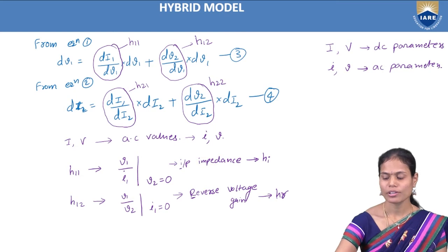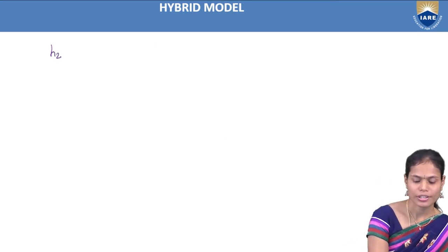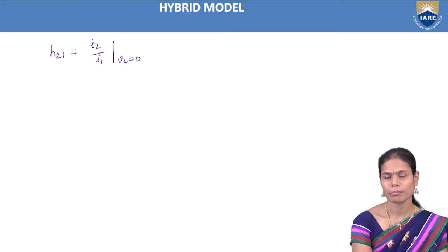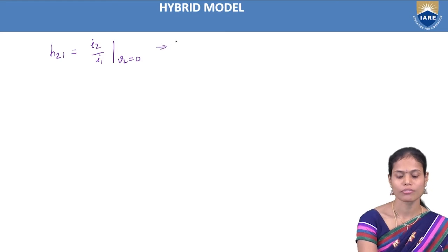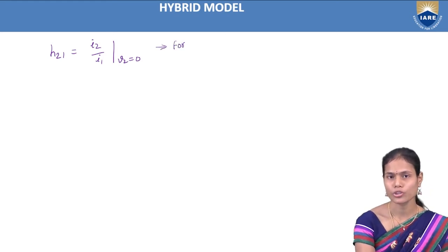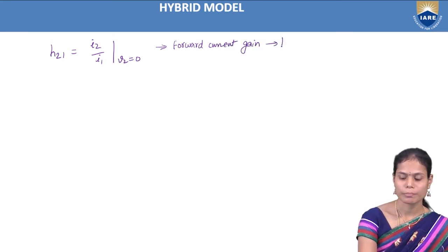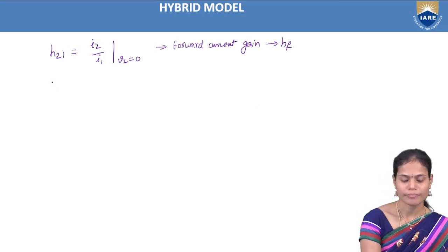H21 is I2/I1 when V2 = 0 (output short-circuited). Since it involves port 2 current over port 1 current, it is the forward current gain, abbreviated HF.